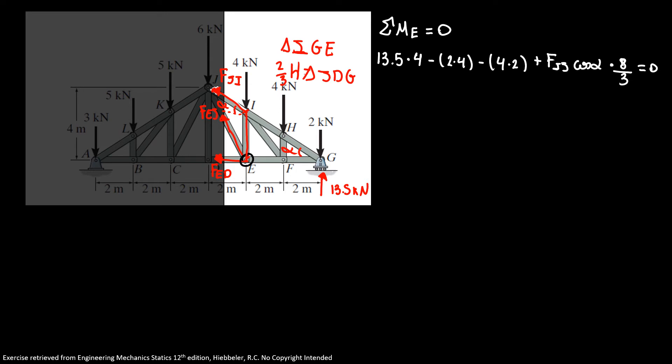Now we know that our F_IJ cosine of alpha 8 thirds equals minus 38, so our F_IJ equals minus 17.13, so our F_IJ equals minus 17.1 kilonewtons. If it's minus we know that this is in compression.